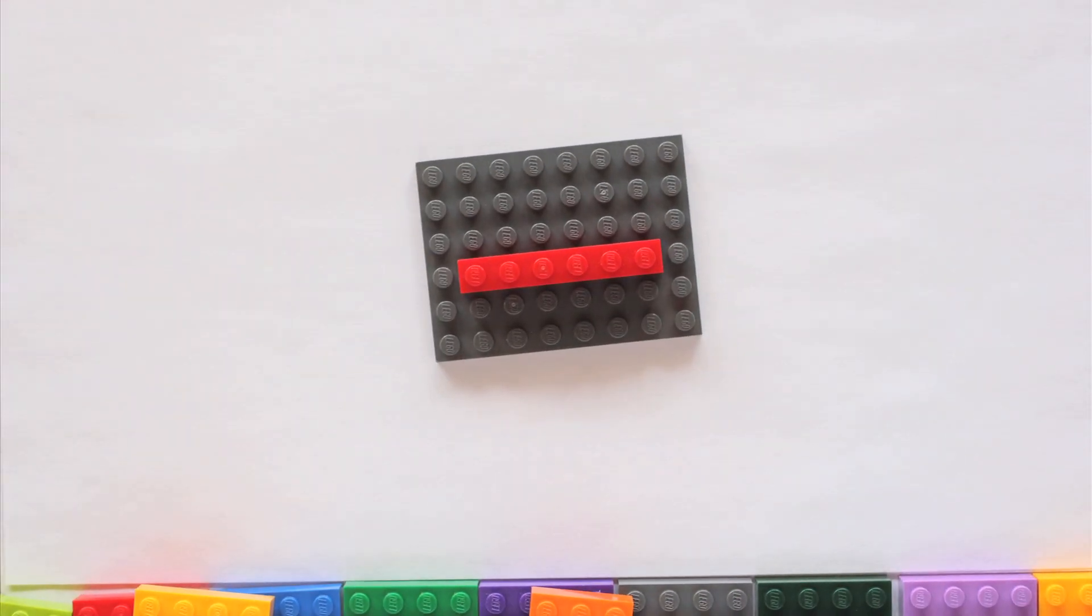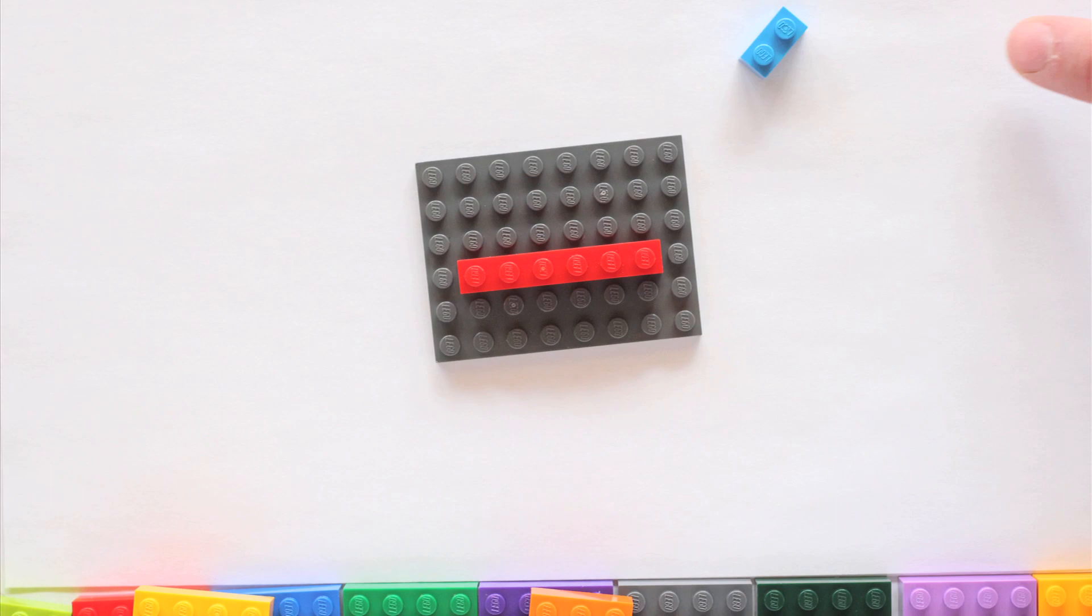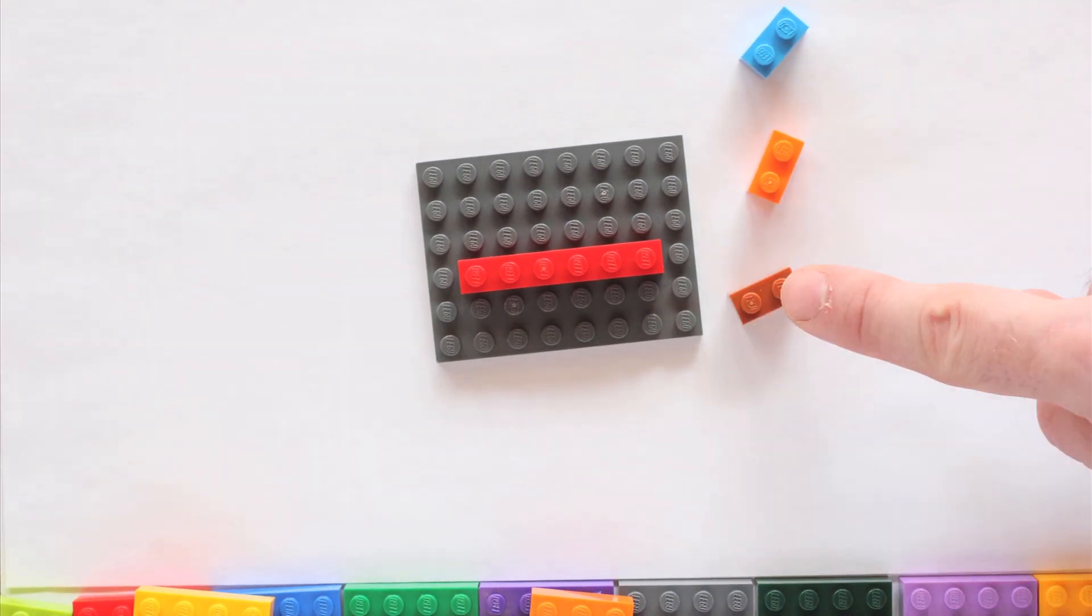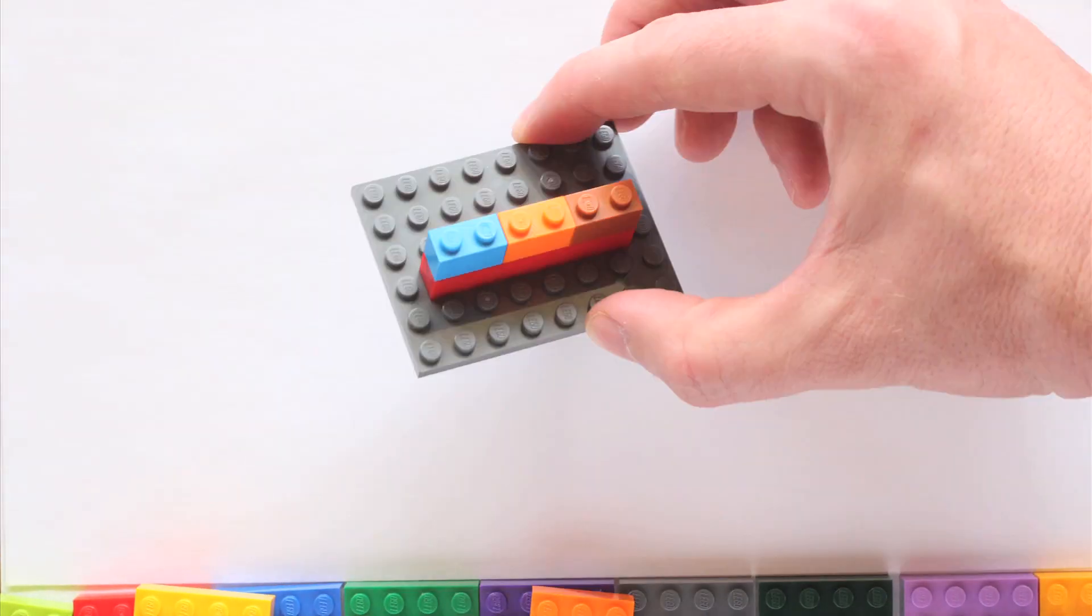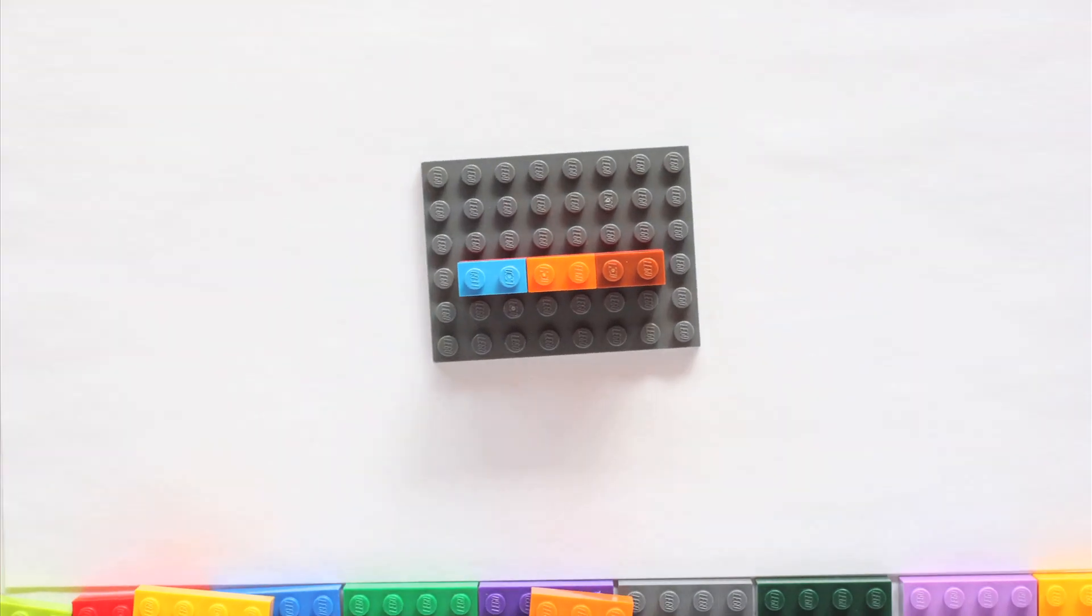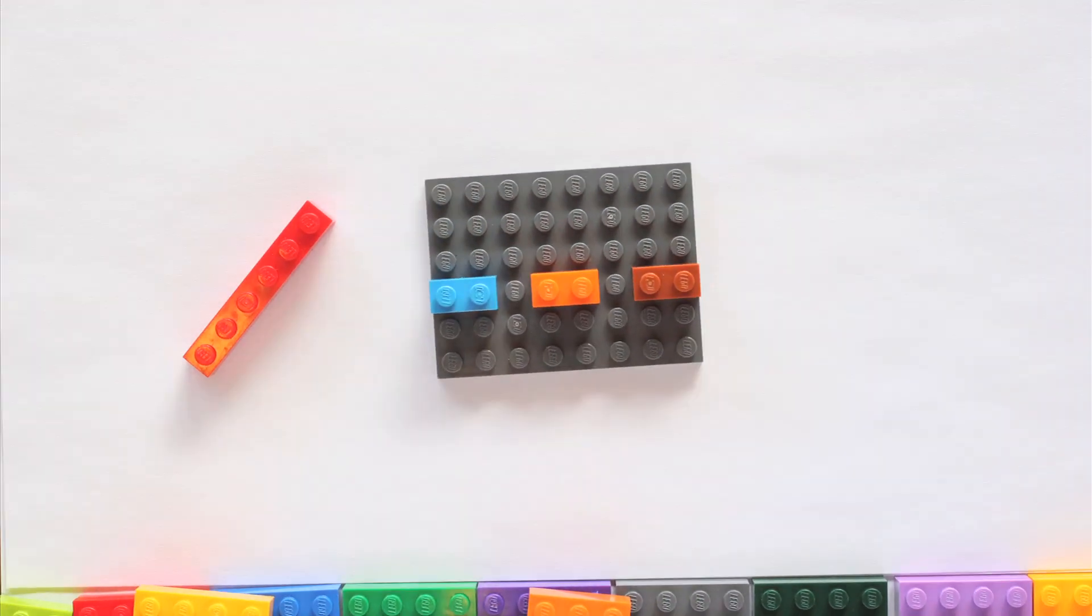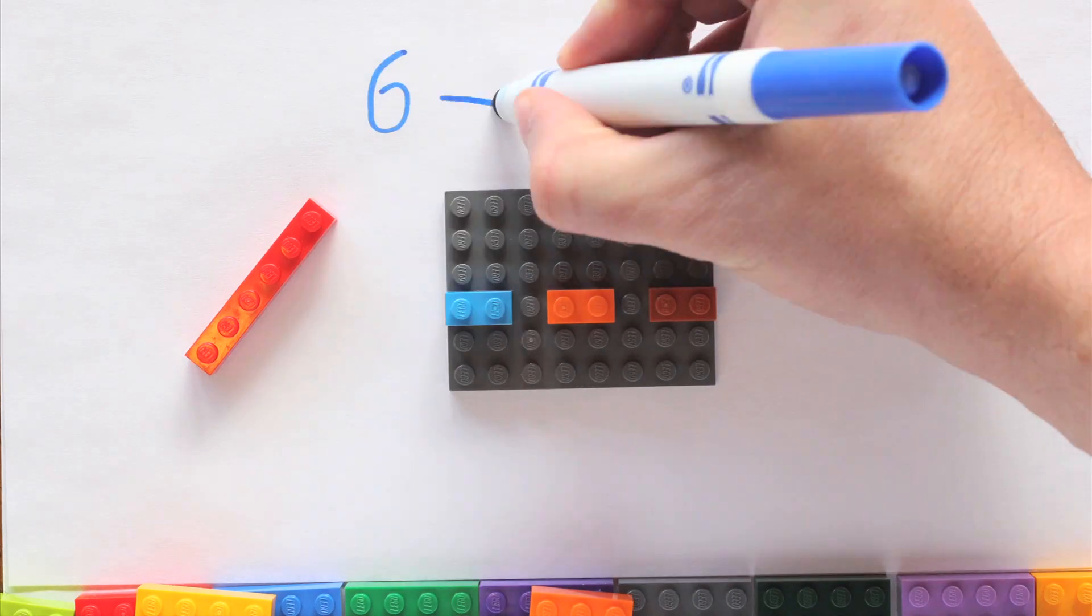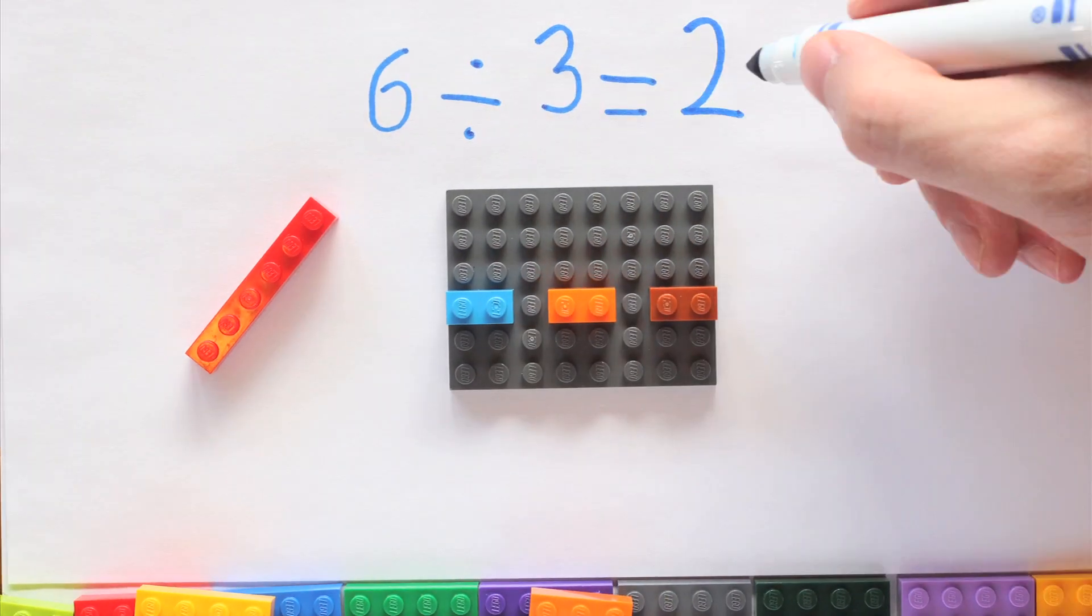For the third part of this exercise, place a 1x6 brick on a base plate. Ask students to find three bricks that fit on top of this brick with no studs left uncovered. The answer is three 1x2 bricks. Ask students what this model shows. The model shows that 6 divided by 3 equals 2.